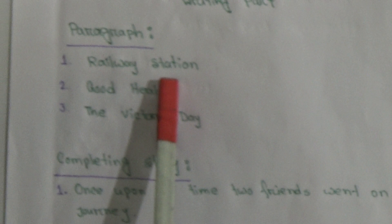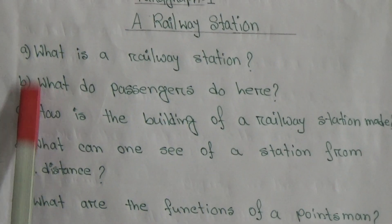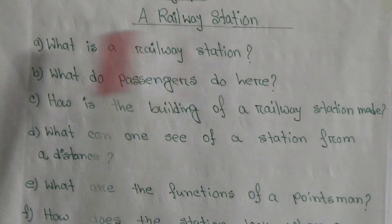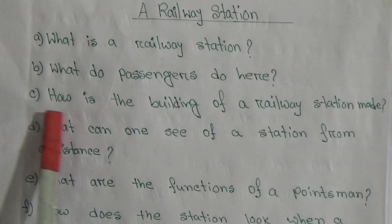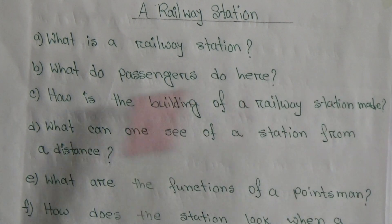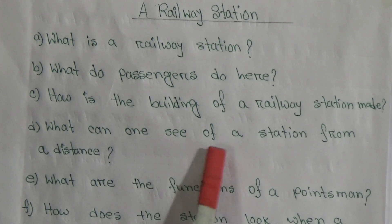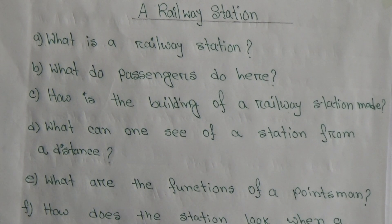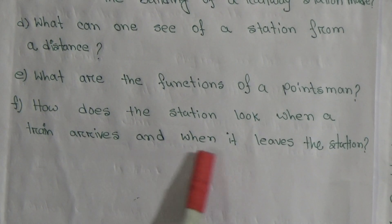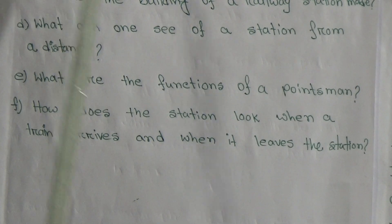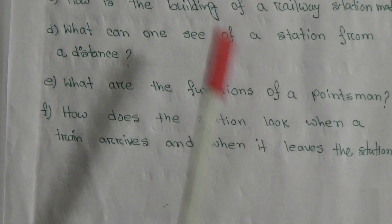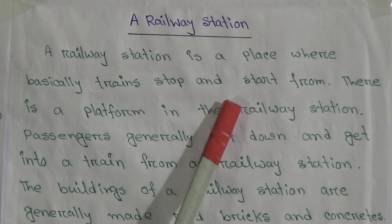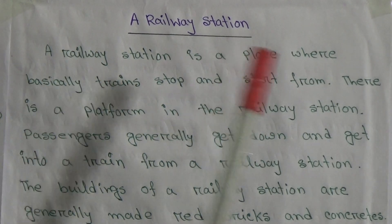Today we will start Paragraph 1: Railway Station. Here are some questions: What is a railway station? What do passengers do here? How is the building of a railway station made? What can one see at a station from a distance? What are the functions of a pointsman? How does the station look when a train arrives and when it leaves the station? You have to write a paragraph based on these questions.